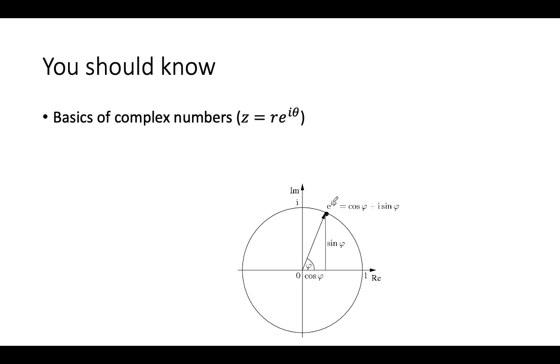You can also do the computation of what the value of e to the i phi is. For example, phi equals 0, you'll just get e to the i 0, cosine of 0 is 1, i sine of 0 is 0, so that's just 1, which does make sense.